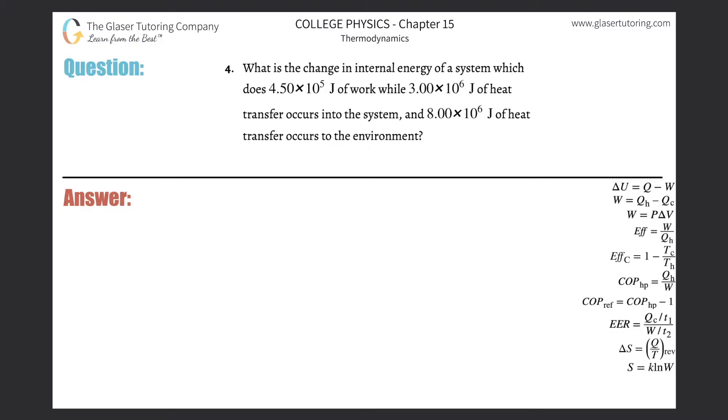Number four, what is the change in internal energy of a system which does 4.5 times 10 to the 5 joules of work while 3 times 10 to the 6 joules of heat transfer occurs into the system and 8 times 10 to the 6 joules of heat transfer occurs to the environment?